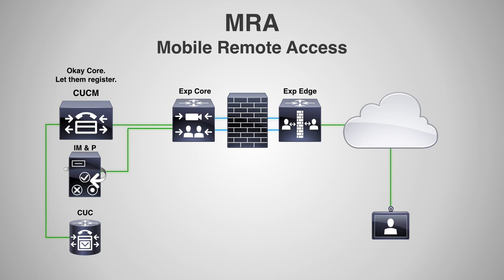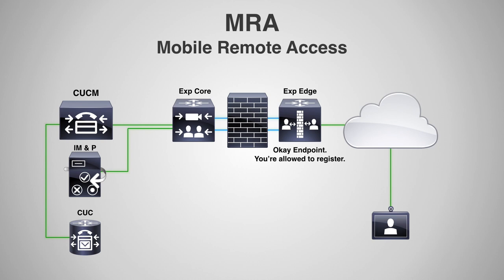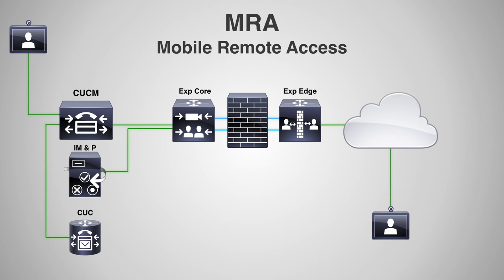The Core then says to the Edge, 'let them register,' and the Edge says to the endpoint, 'you're allowed to register,' and then the endpoint registers to the CCM. So if I had another endpoint inside the firewall that was already registered to the CCM, now these two endpoints can call each other. All of the signaling is going to go through the CCM, but then the actual media will go through the Expressway Core and Edge. That's just a general overview of how MRA works.